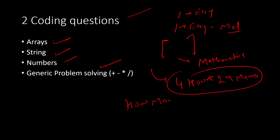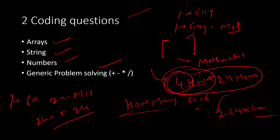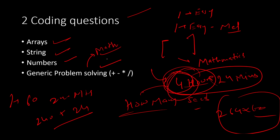For example, if it is 4 hours and 24 minutes, how many seconds will that be? You know in one minute there are 60 seconds. You can convert all the hours into minutes — 4 hours is 240 minutes, plus 24 minutes equals 264 minutes — then multiply by 60. So this is basic mathematical computation. Array, strings, and numbers are the favorite topics. They don't ask deep data structures like dynamic programming, trees, or graphs. Basic array, strings, numbers, and generic questions are enough.